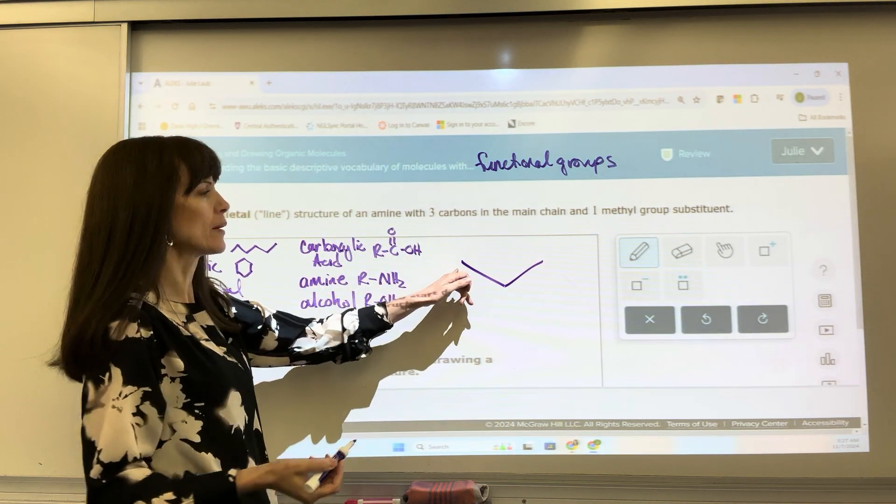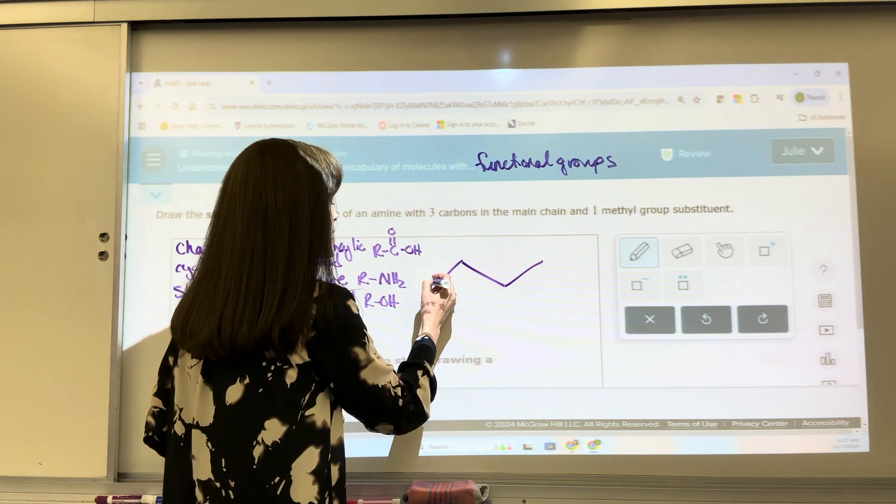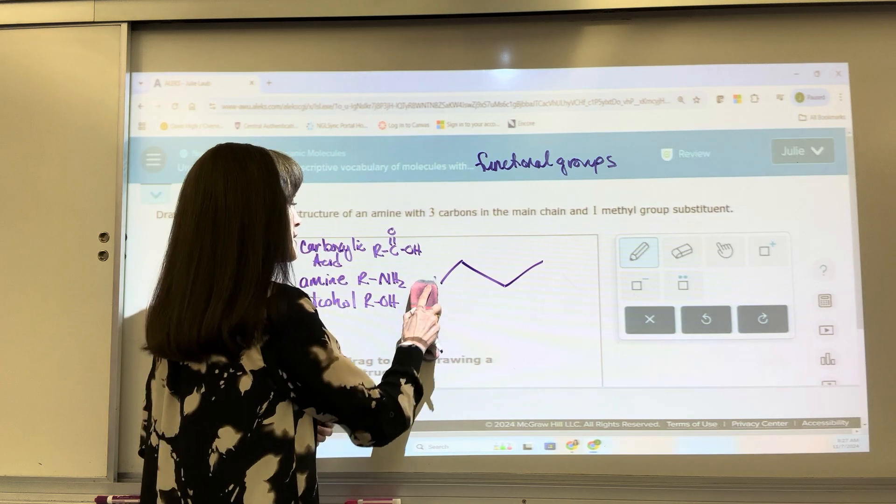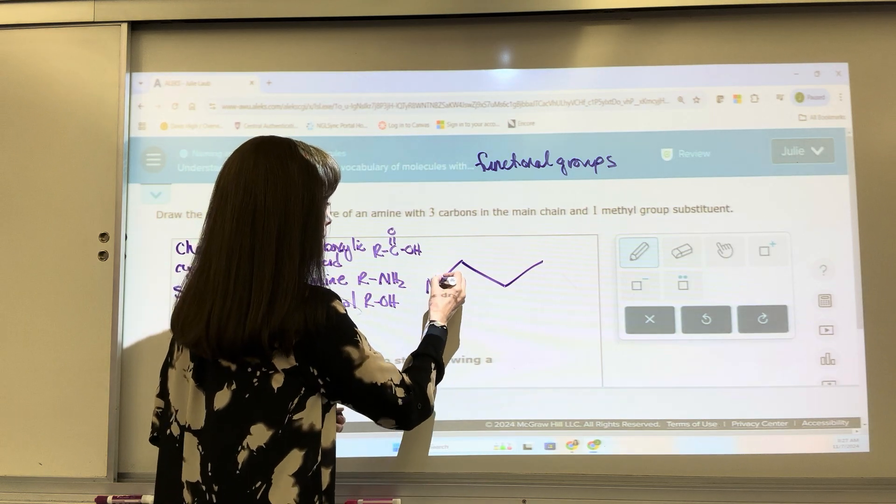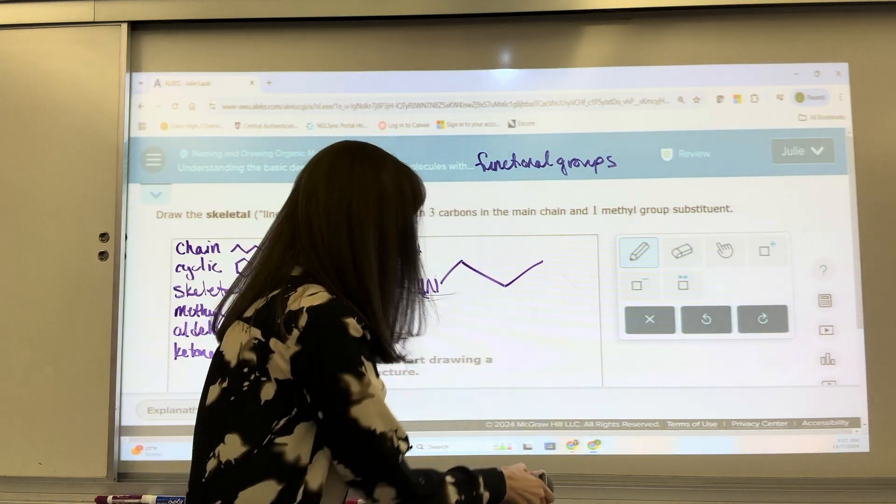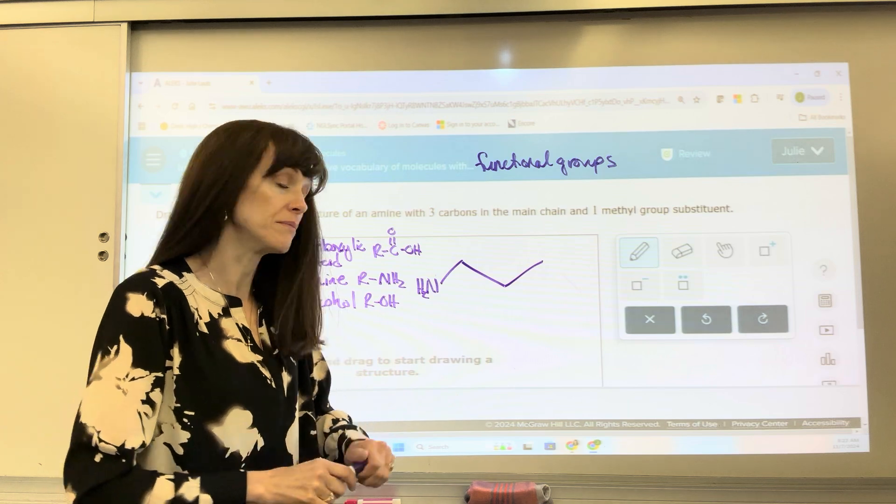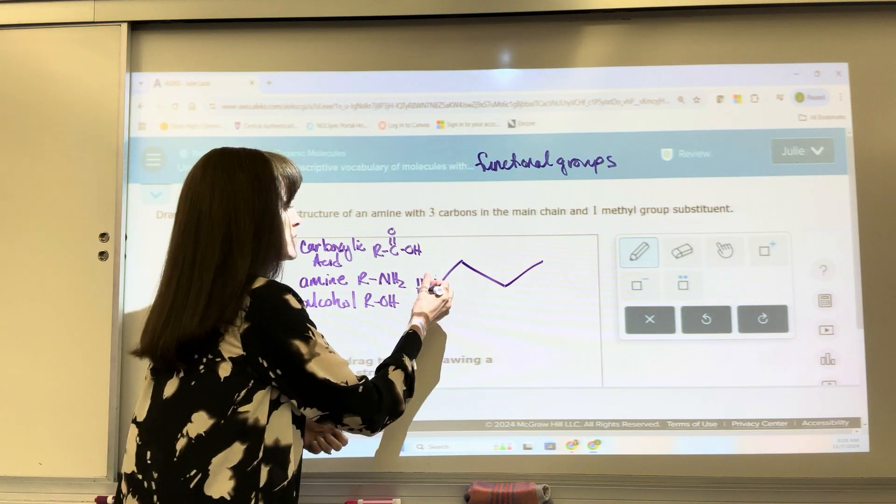For my amine, I'm going to go ahead and put it on the left-hand side. It doesn't matter. So I need to bring this down and put my nitrogen. And I'll put my H2 right there. Now the way ALEKS is coded, if you have an alcohol or an amine on the left-hand side, sorry, that nitrogen.